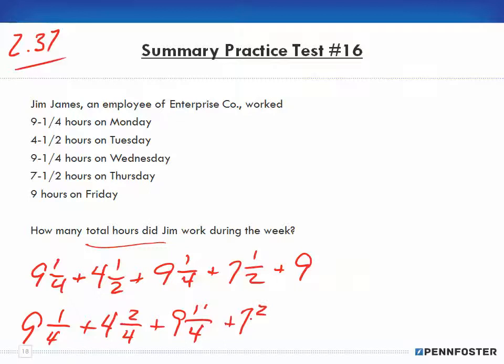Now we can add up all of our whole numbers: 9 and 4 is 13, and 9 is 22, and 7 is 29, and 9 is 38. Now we put our denominator of 4 and add up our numerators: 1 plus 2 plus 1 is 4, plus 2 is 6. So that's 6 fourths, and since that's an improper fraction, 4 can go into 6 one time.